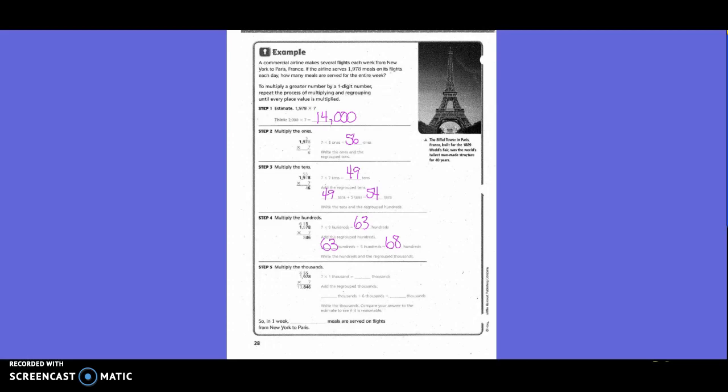Now we're moving to the thousands place. So 7 times 1,000 gets us 7,000. Now we need to regroup again because we had put another number up in our thousands place. So we had 7,000 plus the 6,000 that we need to regroup with. So that equals 13,000. And in this case we would just be able to directly write it, correct? Because do we have any other place values that we need to go to? No. So in one week, 13,846 meals are served on flights from New York to Paris.